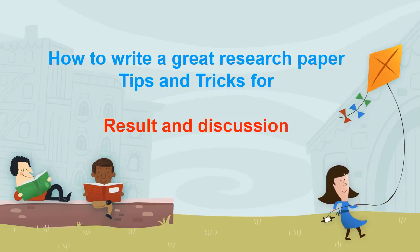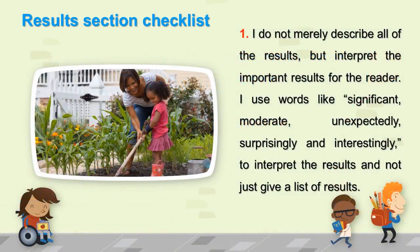Let's begin. When you write the results and discussion section, you should follow the steps to have a great results and discussion section. Results section checklist. One: I do not merely describe all of the results, but interpret the important results for the reader.